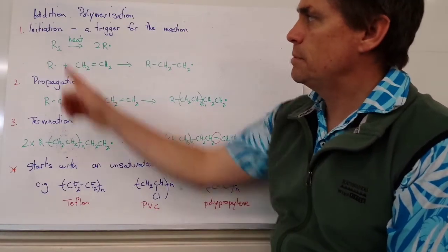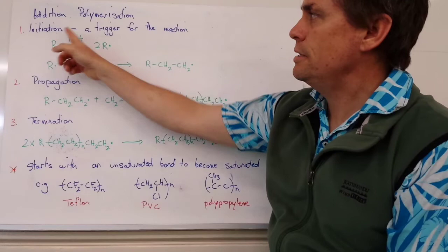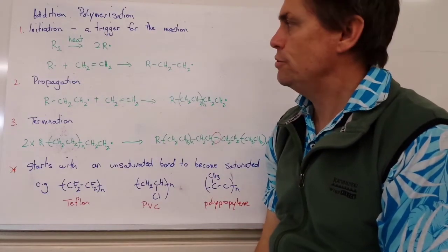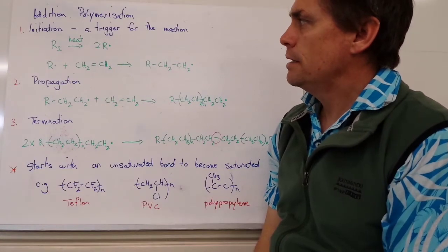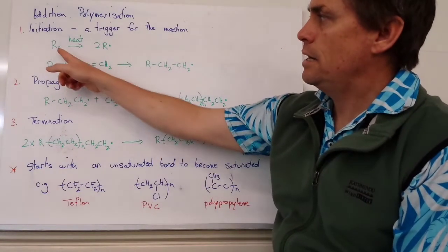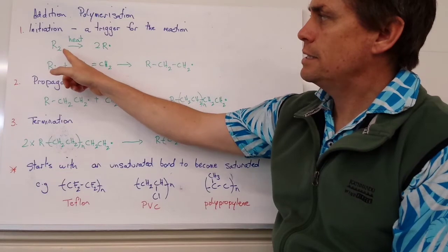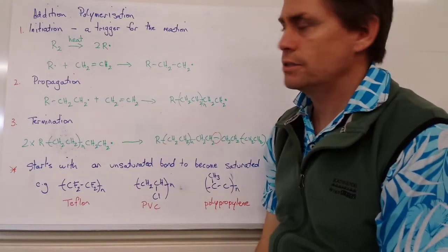So our first step is what we call the initiation, and that's a trigger for the reaction to join the monomers together. And what's often used is a halide. And that halide is heated to give us two radicals.